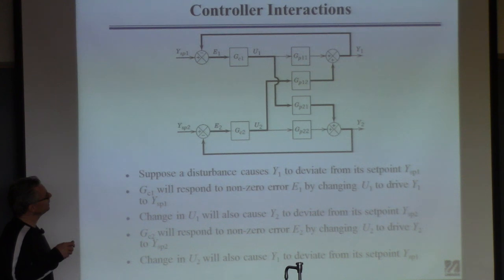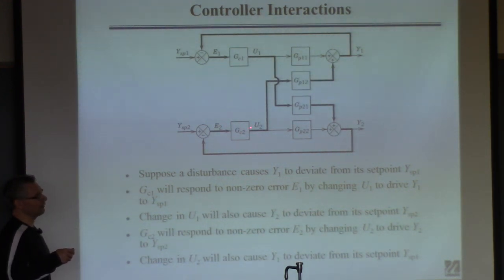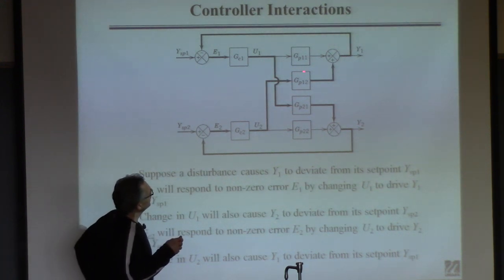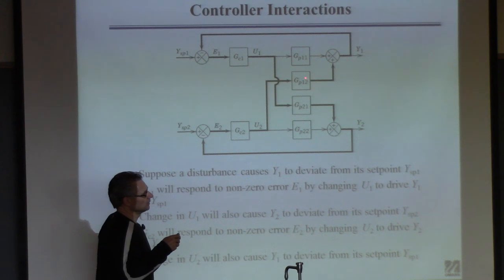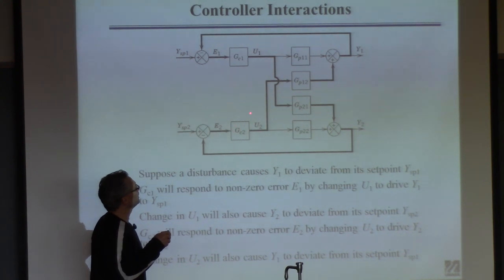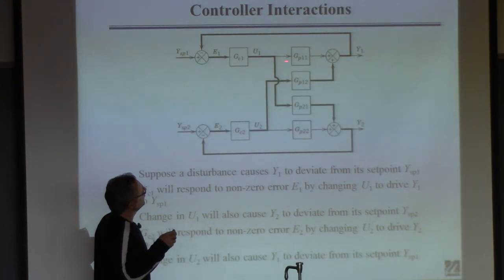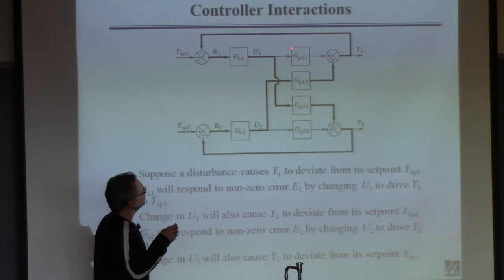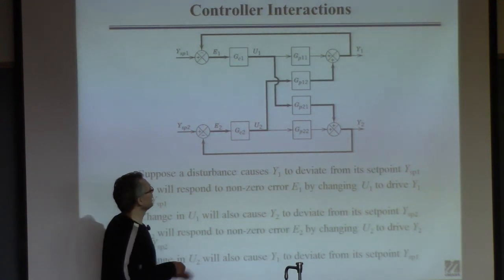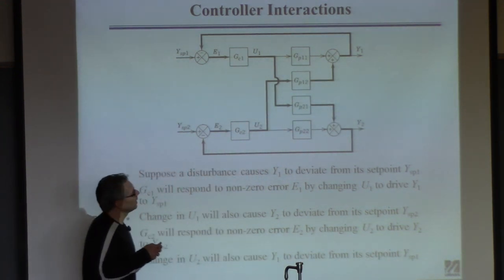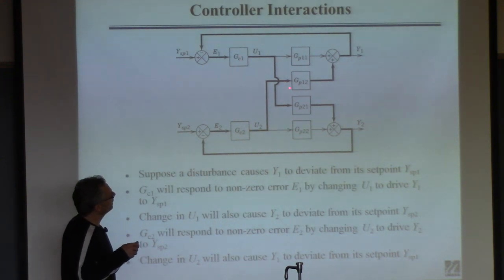Now I'll do a small analysis of that scenario. Let's say the second controller — the one controlling Y2 — is in manual, meaning it's turned off (controller transfer function equals zero). That means that pathway doesn't exist. In that case, the transfer function between Y1 and U1 is simply P11, because the other path through the second controller is zeroed out. This is actually what you want when designing the first controller, since you design it based on P11. So if the other controller is off, you should be okay.